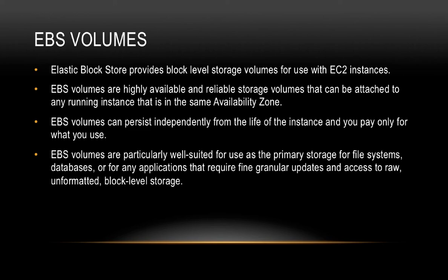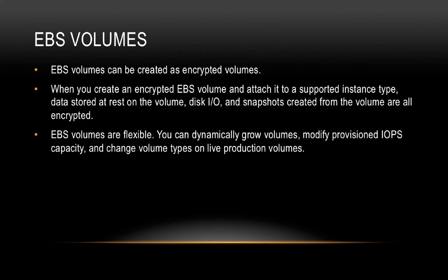Think of an EBS volume like a hard disk on your physical computer. EBS volumes can also be created as encrypted volumes. When we create an encrypted EBS volume and attach it to a supported instance type, data stored at rest on the volume, along with disk IO and snapshots created from the volume, are all encrypted. EBS volumes are flexible — you can dynamically grow volumes, modify the provisioned IOPS capacity, and change volume types on live production volumes. IOPS stands for input-output per second. Even when your EC2 instance is running, you can change the size of the volume, modify the provisioned IOPS, and change the volume type.